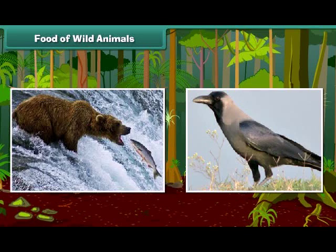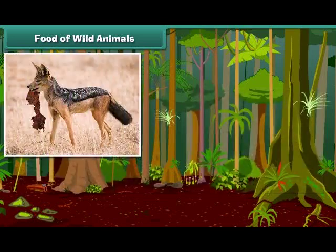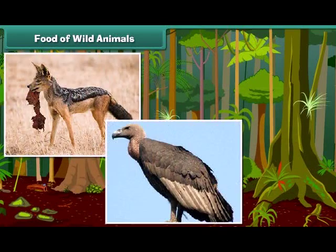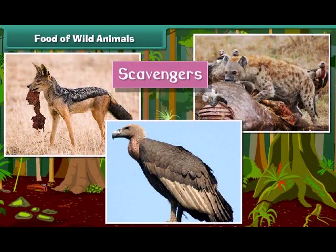Animals like bear and crow are called omnivorous animals as they eat both plants and animals. Jackals, vultures, and hyenas are called scavengers — they eat the flesh of dead animals.